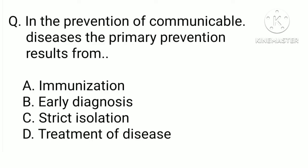In the prevention of communicable diseases, primary prevention results from: a) immunization, b) early diagnosis, c) strict isolation, or d) treatment of disease. The correct answer is a) immunization.